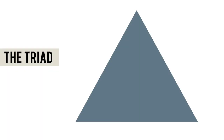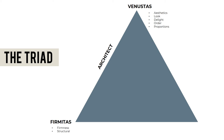In doing your plan or design, you should consider the Triad: Venustas, which features aesthetics, look, delight, order, and proportion; Firmitas; and Utilitas. A beautiful architectural design has all three factors: Venustas, Firmitas, and Utilitas.